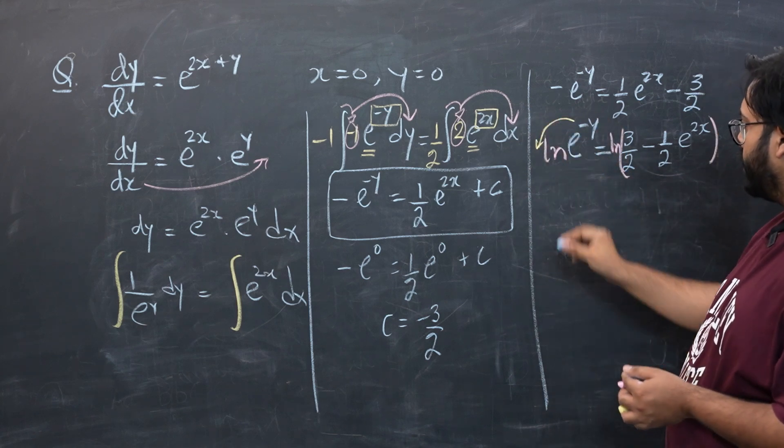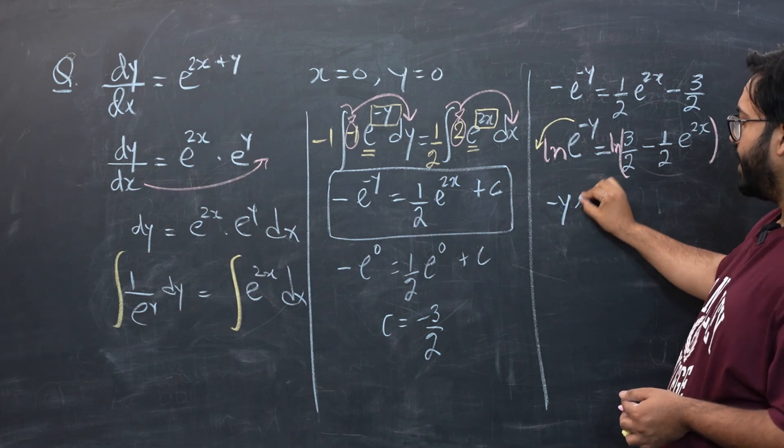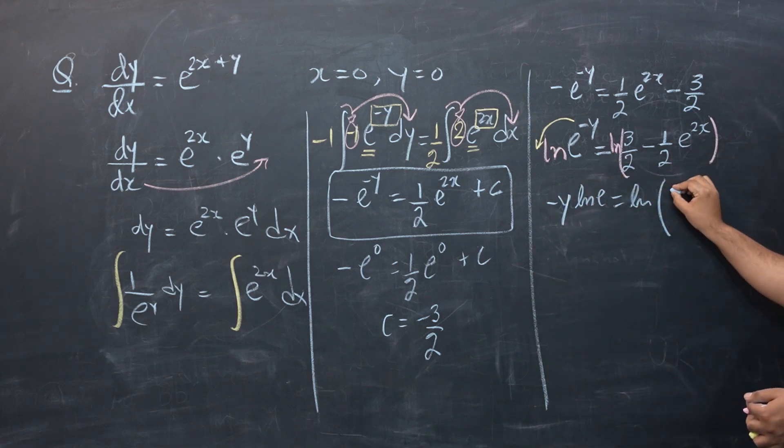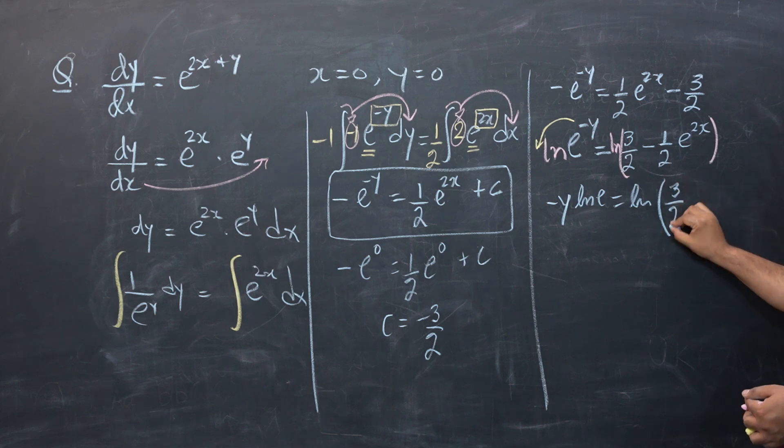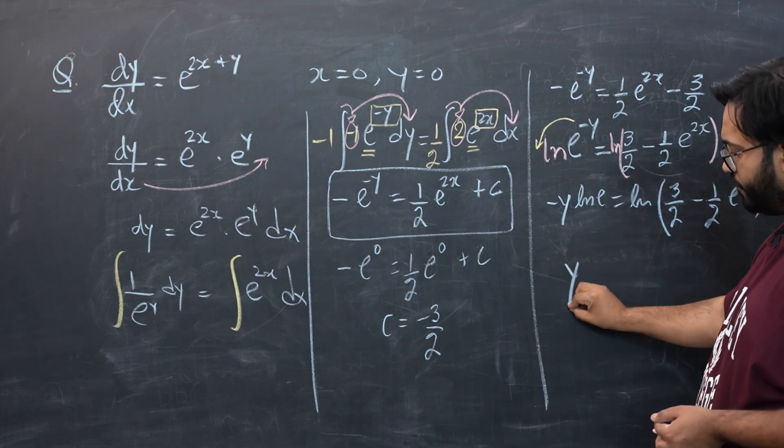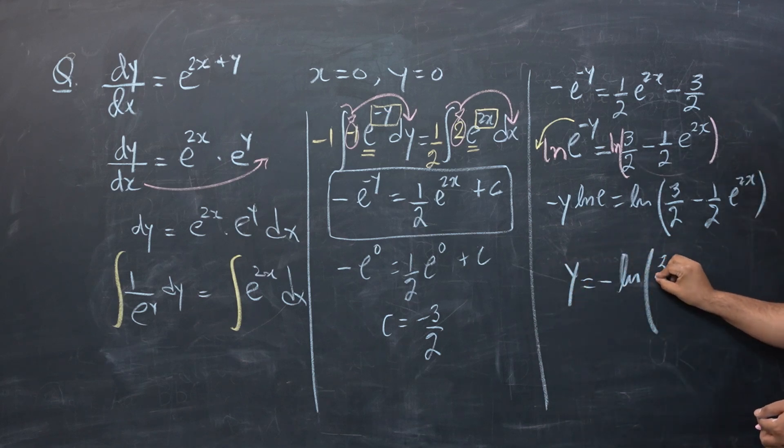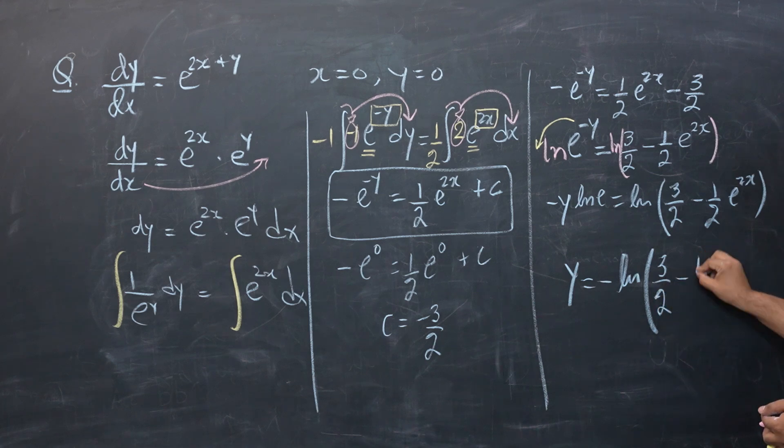Negative y, and then e would become 1 later on, is equals to log of 3 by 2 minus 1 by 2 e raised to power 2x. Now for the last step, y will be equal to negative log of 3 by 2 minus 1 by 2 e raised to power 2x. And this is our final differential equation.